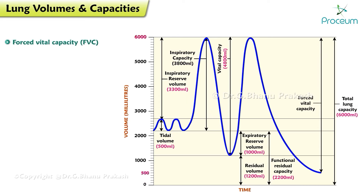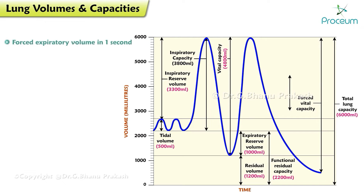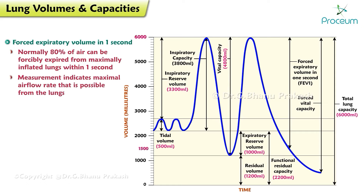Forced vital capacity (FVC): the volume of gas exhaled from the completely inflated lungs during a maximal expiratory effort. Forced expiratory volume in one second (FEV1): the volume of air that can be expired during the first second of expiration in a vital capacity determination. Usually FEV1 is about 80 percent of vital capacity — normally 80 percent of the air that can be forcibly expired from maximally inflated lungs within one second. This measurement indicates the maximal air flow rate that is possible from the lungs.